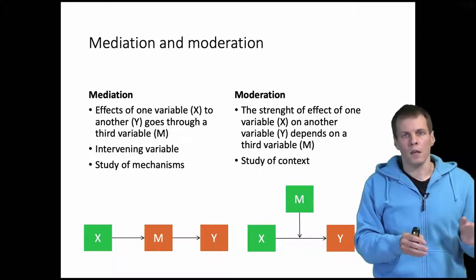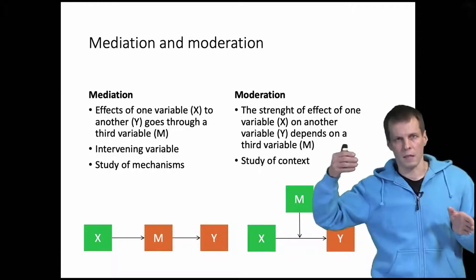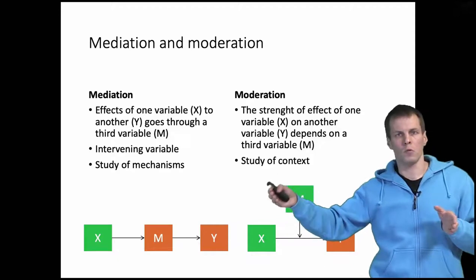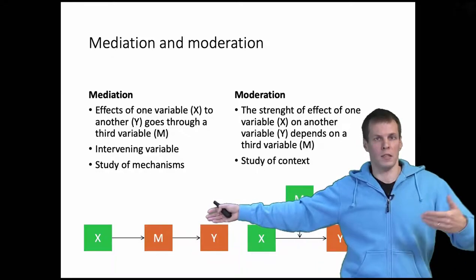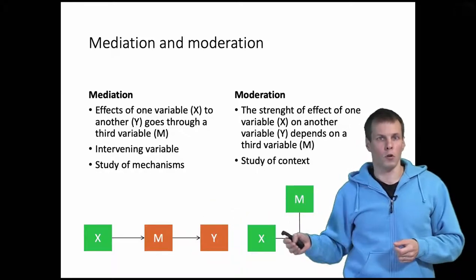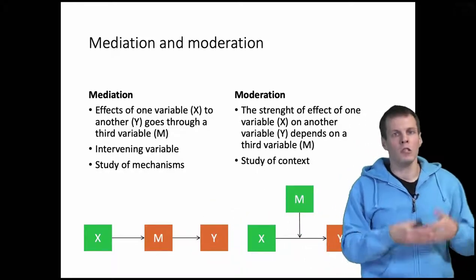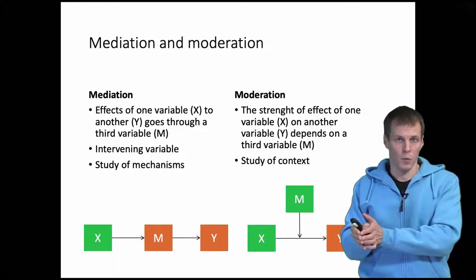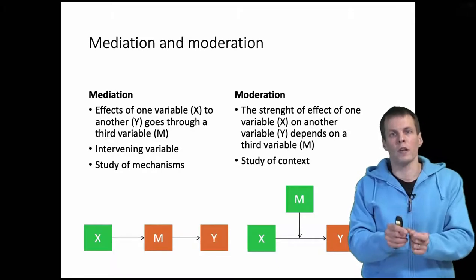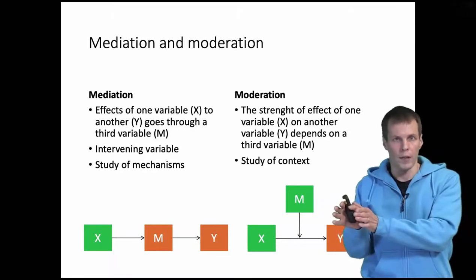If x causes m and m causes y, then if for some reason the level of m would not change even if x changes, then y would not occur. For example, if you study but you don't learn, then you can't expect to perform well. So studying must lead to learning, learning leads to performing well on the exam.